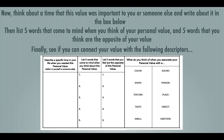In the last chunk of the box — this might be the most challenging part — I want you to connect your value with these descriptors. Is there a color you associate with your word? Is there a shape? Maybe you want to draw the shape in the box or just describe it. Is there a texture? When you think of the word fun, do you think of something soft and gentle, bumpy, sticky, or spiky? For a word like respect, what texture goes along with that? If you don't have an answer right away, that's okay — go on to the next one.